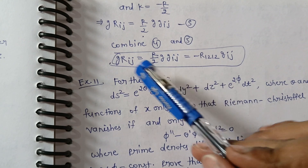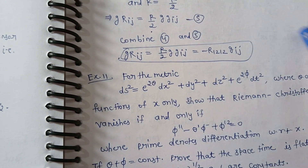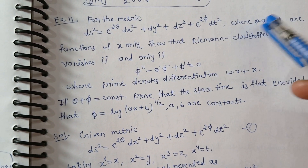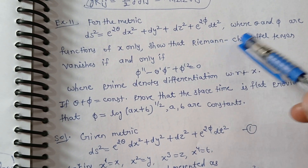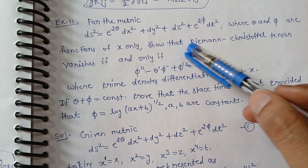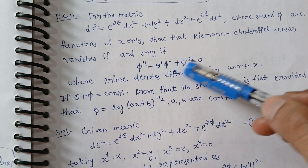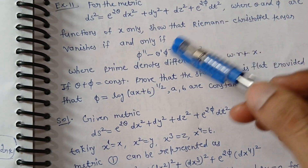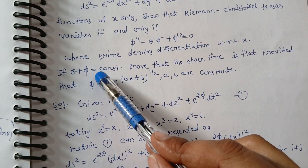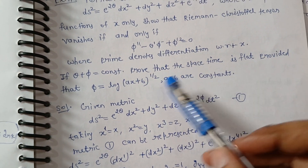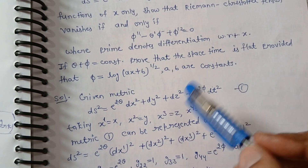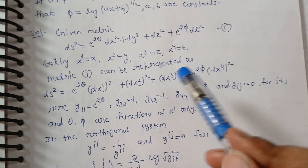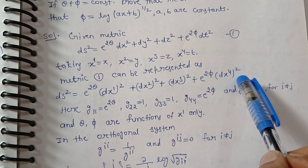Example 11: We are given a metric where theta and phi are functions of x. We must show that the Riemannian curvature tensor R_ij vanishes if and only if theta-double-dash plus phi equals constant. The metric has four variables x, y, z, t and we write ds² = dx₁² + dx₂² + dx₃² + dx₄² in the appropriate form.